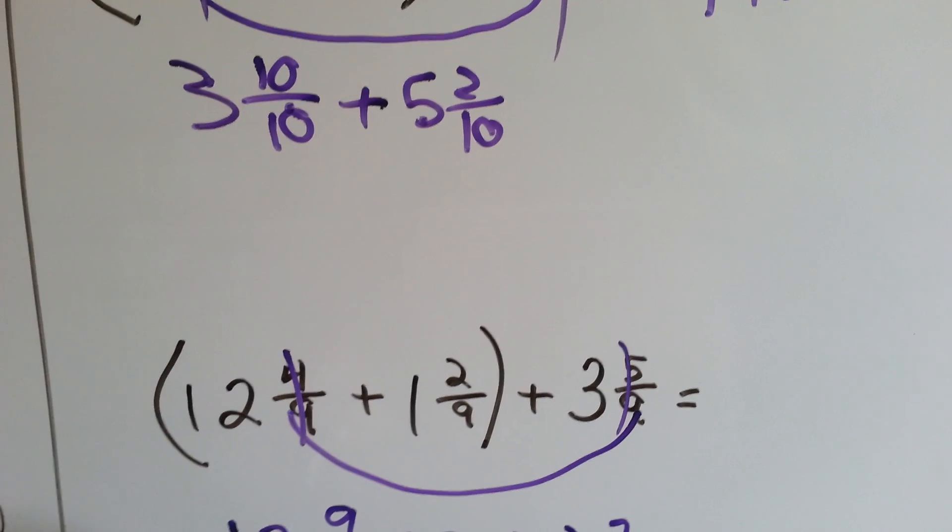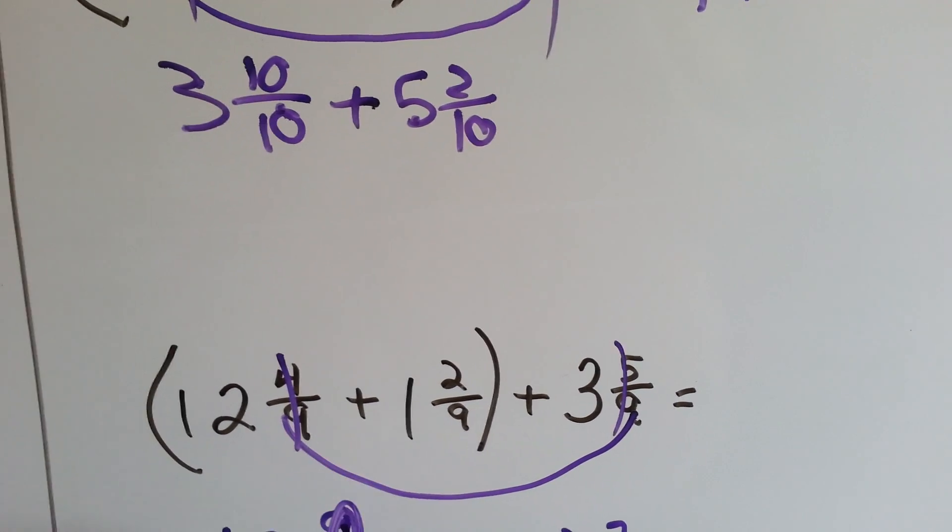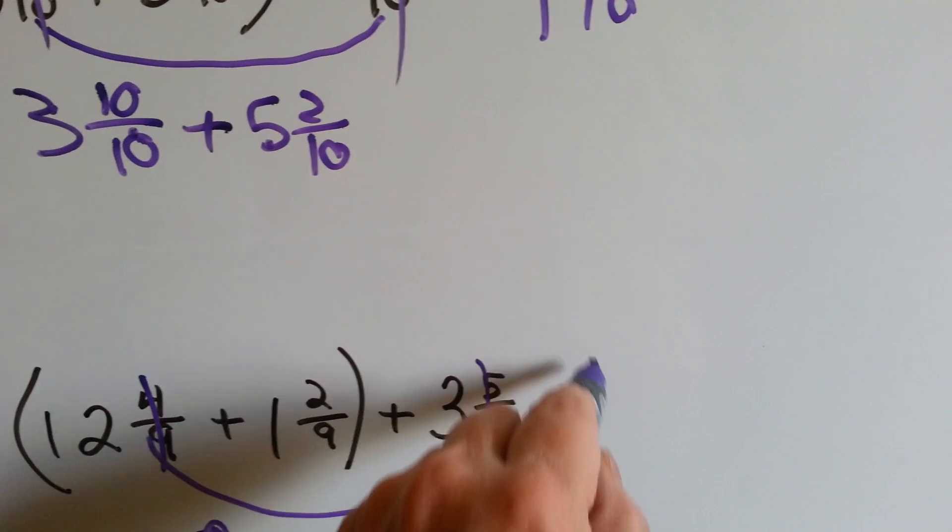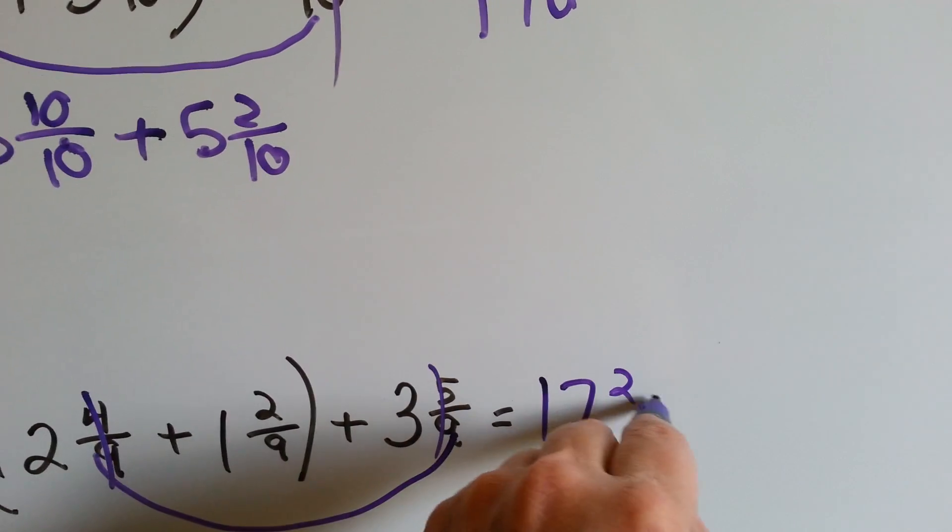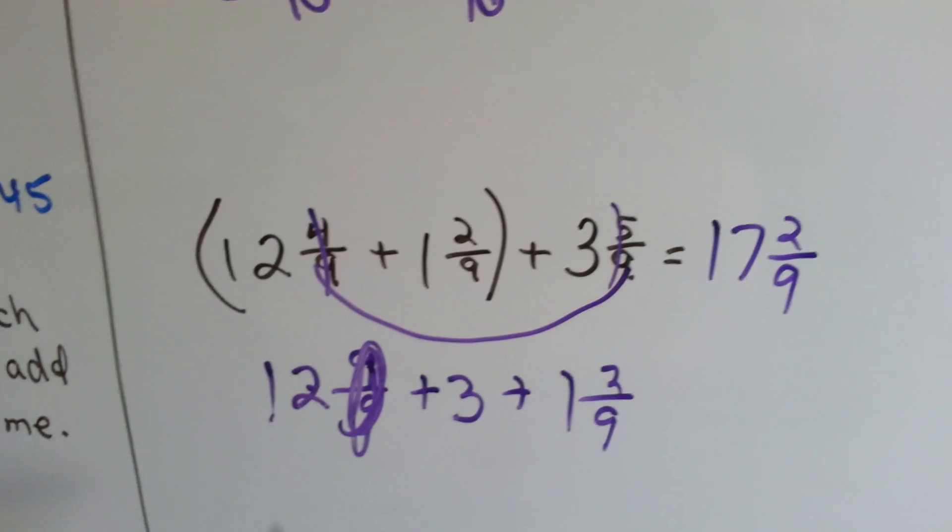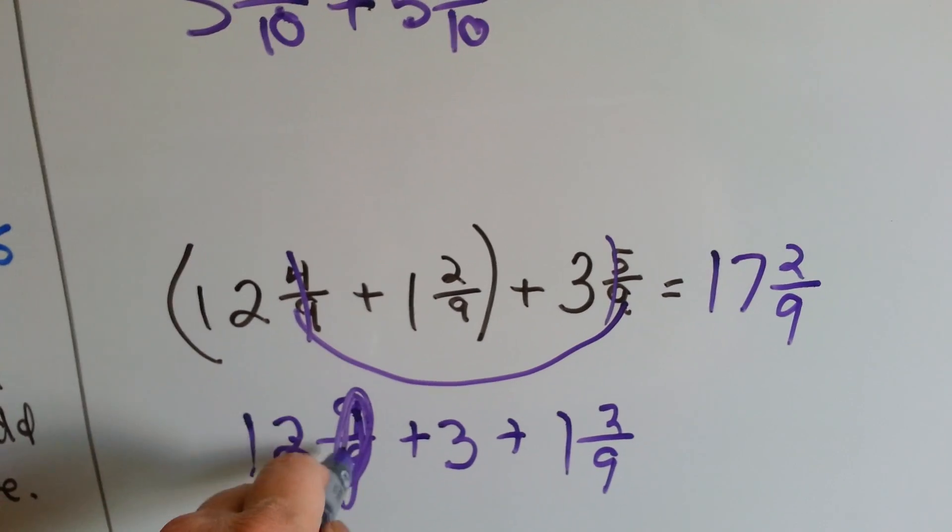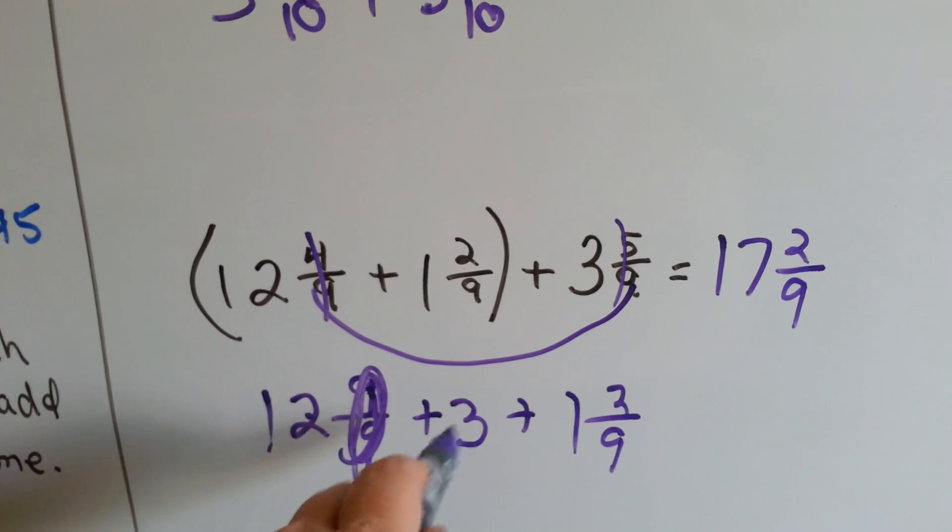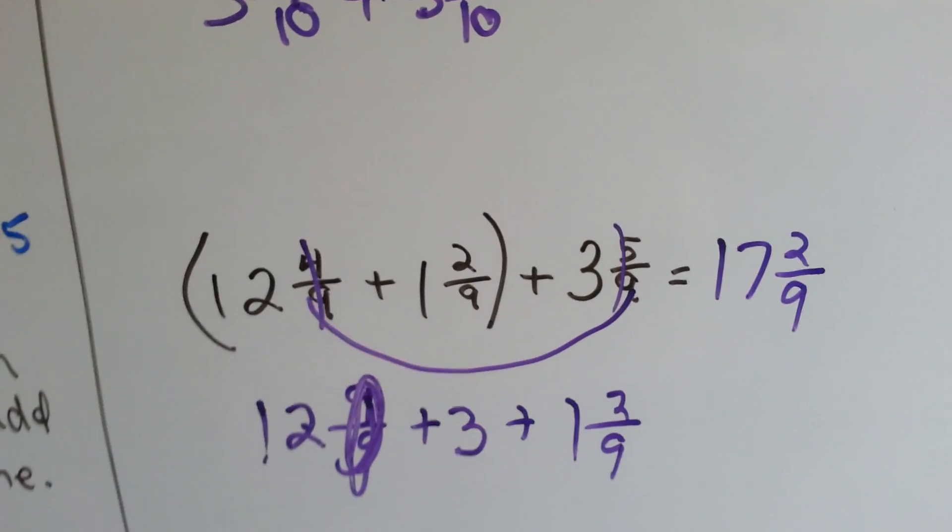So we've got 12, 13, 14, 15, 16, 17, and 2 ninths. Sorry about cutting off that on the bottom. We had 12 and the 9 ninths that these two made. 12, 13, 14, 15, 16, 17, and 2 ninths.